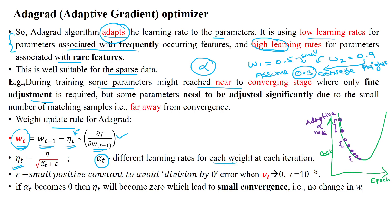The learning rate eta_t is given as eta divided by the square root of alpha_t-hat plus epsilon. Epsilon is a small positive constant to avoid division by zero. If alpha_t becomes zero, this term would go to zero, and without epsilon, eta divided by zero would give infinity, meaning no useful update to the weight parameter.